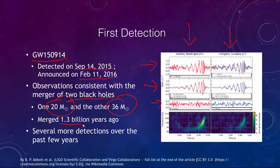These black holes would have merged 1.3 billion years ago, in a galaxy over a billion light years away. The Earth was quite different at that time, but those gravitational waves, which travel at the speed of light, have taken that long to reach us. There have now been a number of additional detections made over the last few years, and more will continue to be made. Most of what has been detected so far is from black hole mergers, but we have also been able to detect neutron star mergers as well.